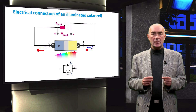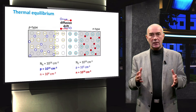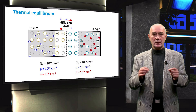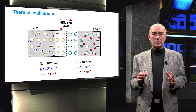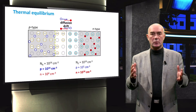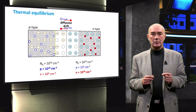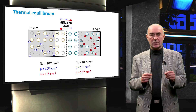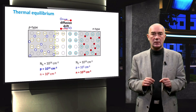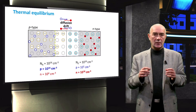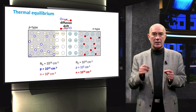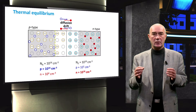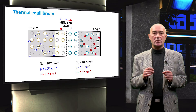Now let's discuss how this photocurrent is generated. We start with a PN junction at thermal equilibrium, meaning there is no external perturbation such as illumination or applied voltage. At thermal equilibrium, the diffusion of electrons and holes across the junction is fully compensated by their drift across the depletion region. When we illuminate a PN junction, some incident photons are absorbed by the semiconductor material, generating extra charge carriers that change the carrier concentration in the junction.